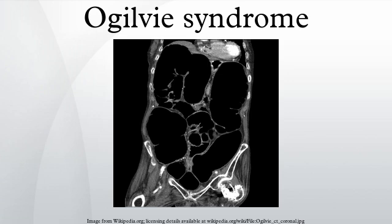Acute megacolon develops because of abnormal intestinal motility. Normal colonic motility requires integration of myogenic, neural, and hormonal influences. The enteric nervous system is independent but is connected to the central nervous system by sympathetic and parasympathetic nerves.